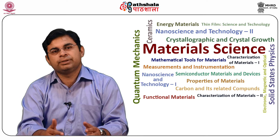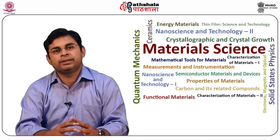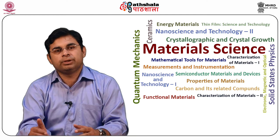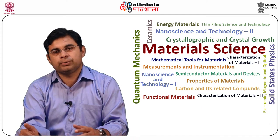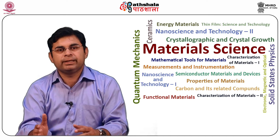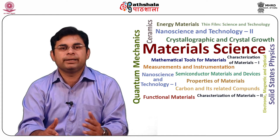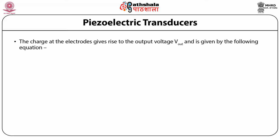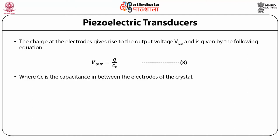The force f brings a change in the thickness of the crystal by Δt in meters, where f = (A × E) / t × Δt newtons (Equation 2), where A is the area of the crystal in meters squared, E is the Young's modulus of elasticity, and t is the thickness of the crystal. The charge at the electrodes gives rise to the output voltage V_out, given by V_out = q / C_c (Equation 3), where C_c is the capacitance between the electrodes of the crystal.